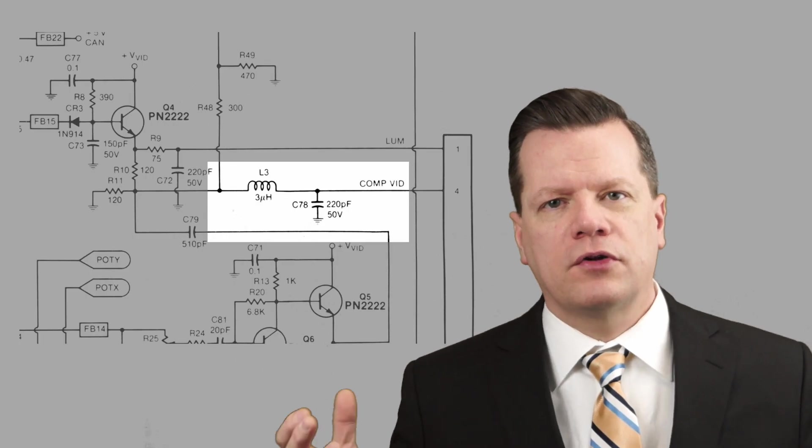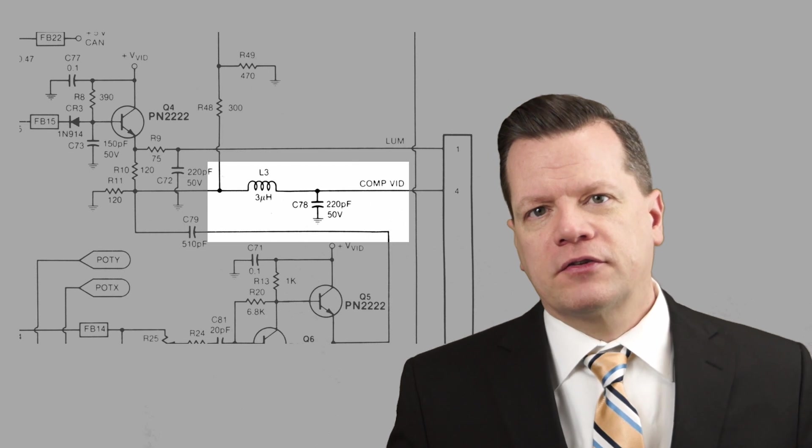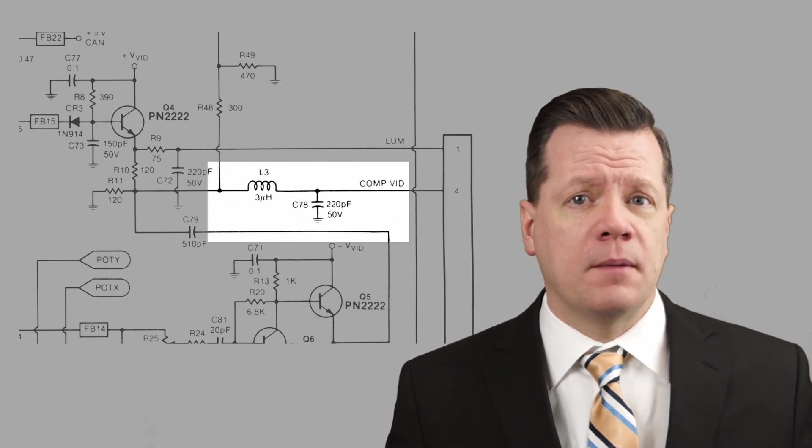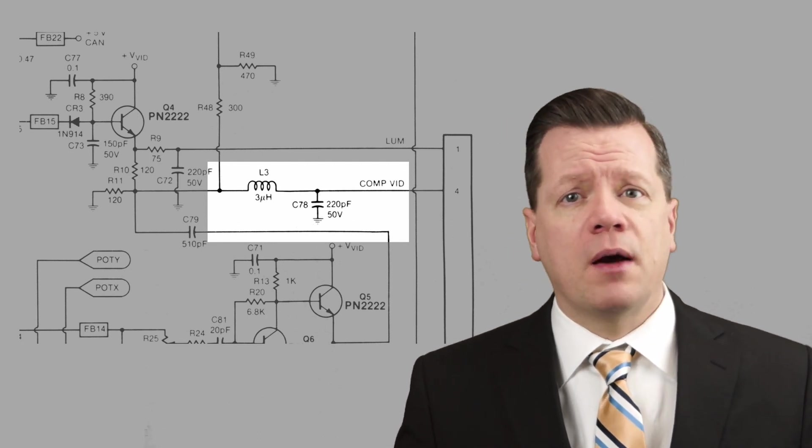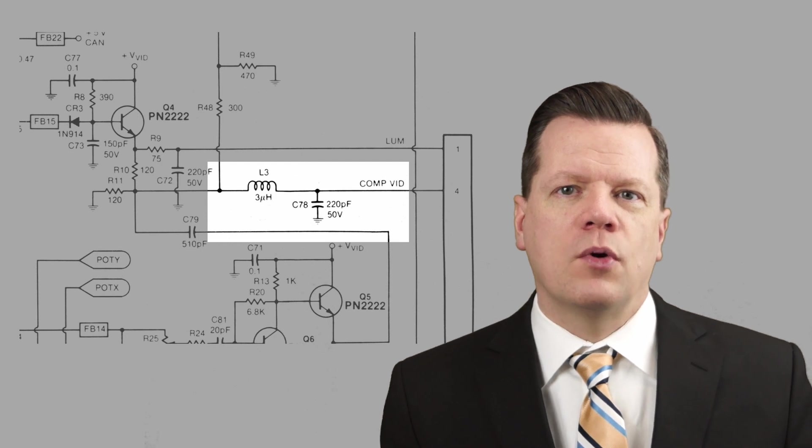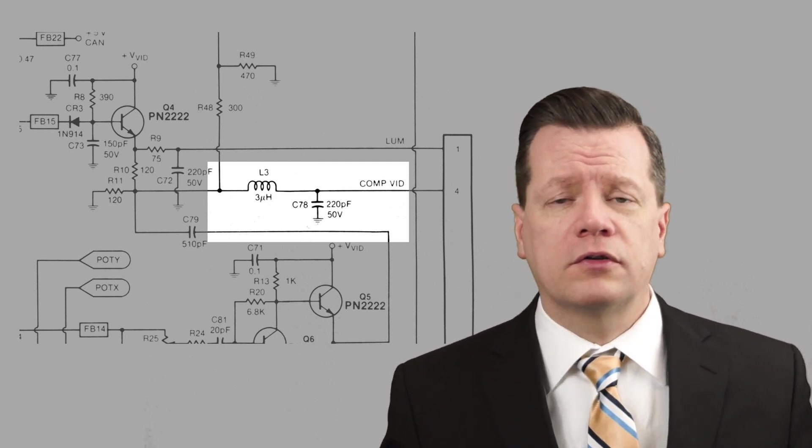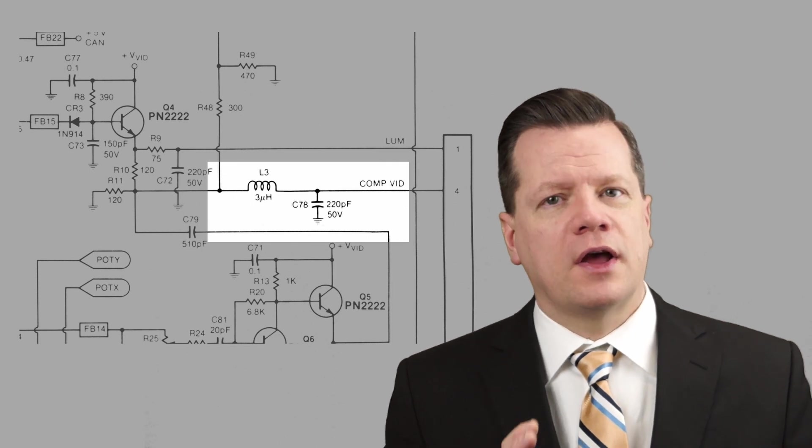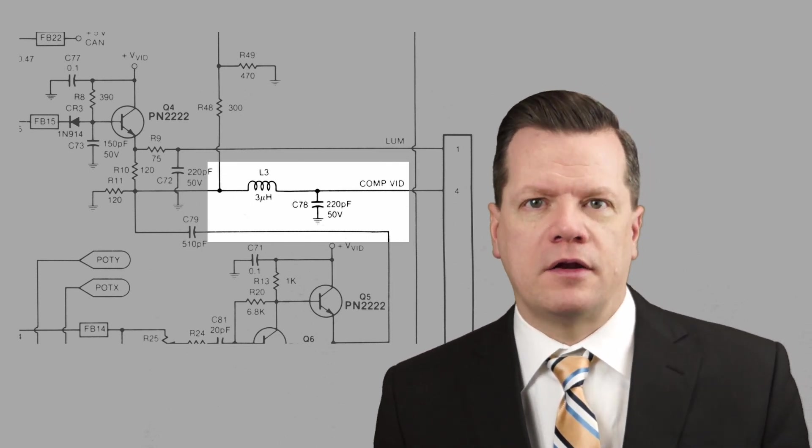Retro computers interface with a number of analog devices. Floppy disks are essentially an analog medium. Cassette tapes, video output, sound input and output. These are all analog. When you're working with analog signals, you often need to filter those signals before they're processed. And one of those filters is quite often an LC filter, which is a filter made from a capacitor and an inductor.